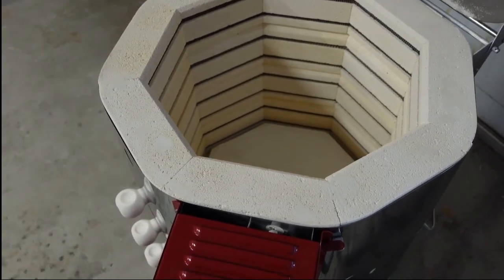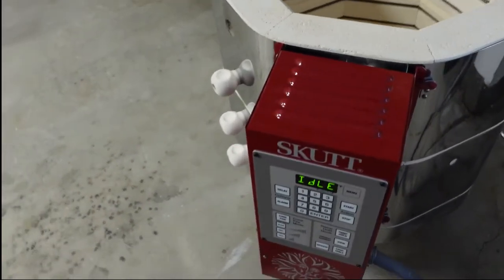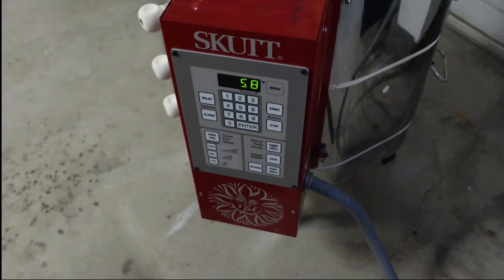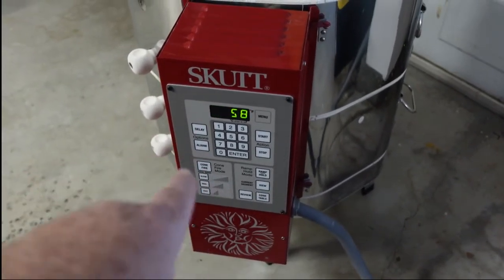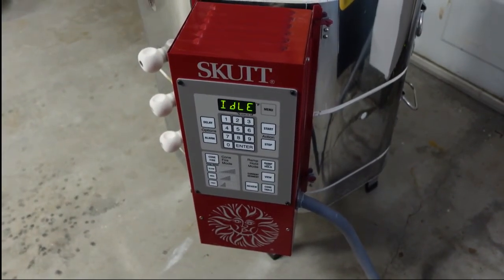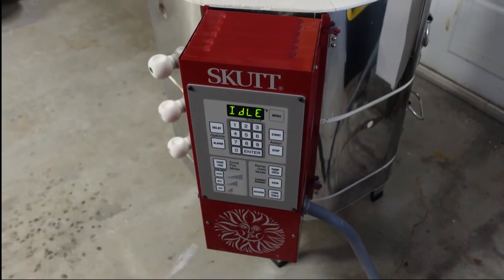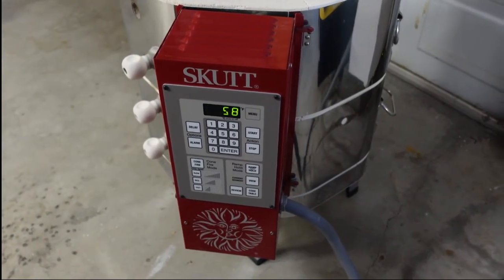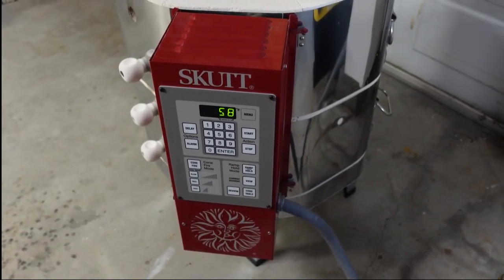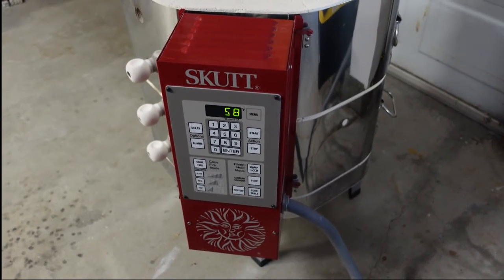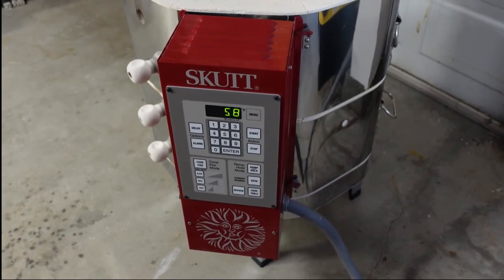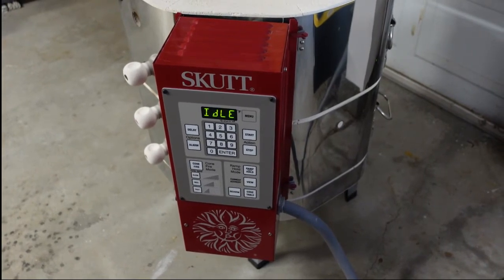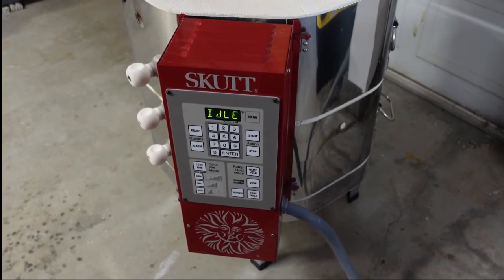I bought this kiln with the standard control pad. You can get one that's like a touchscreen digital type, that's about a $250 option. The benefit of that option is it gives you finer controls on your firing. You can build programs and have your firing ramp up in temperature at a certain rate or slow down at a certain rate.